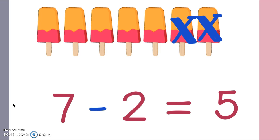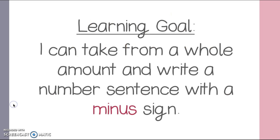All right. You should be feeling good about yourself. Go ahead and say, I'm amazing. Good. All right. Which is great because you are amazing. And our learning goal said, I can take from a whole amount and write a number sentence with the minus sign, which is exactly what you've been doing.